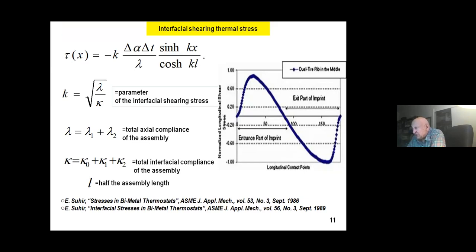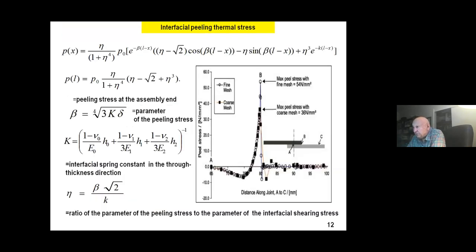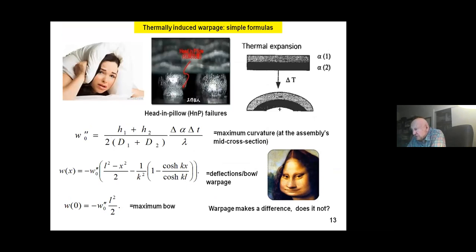Another paradoxical situation is that these stresses do not increase with a further increase in assembly size, provided that the assembly is long enough. It's only in very short assemblies. By saying short I mean the actual width or length of the assembly and also the factor which I call parameter of the interfacial shearing stress, which is the square root of the longitudinal action compliance to the interfacial compliance. This is another important paradoxical but true thing that we should have in mind when we want to understand the physics and bring down the interfacial stresses.